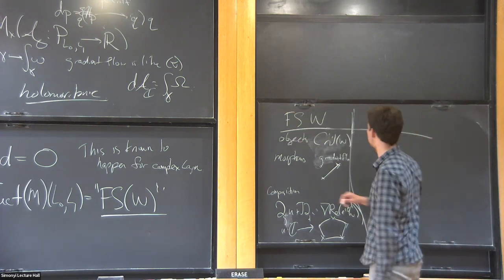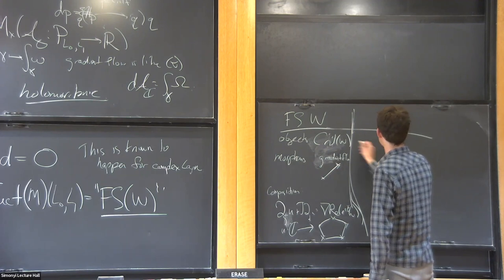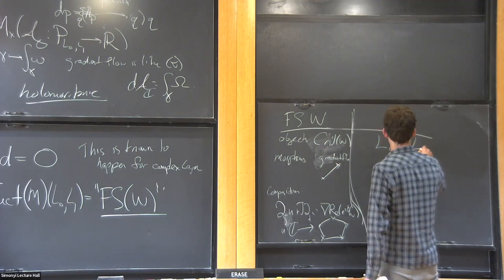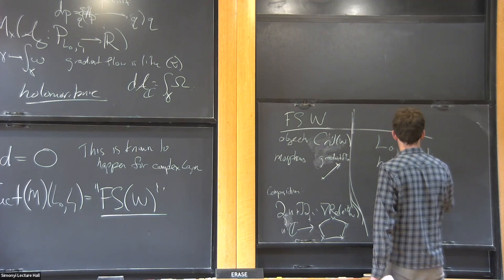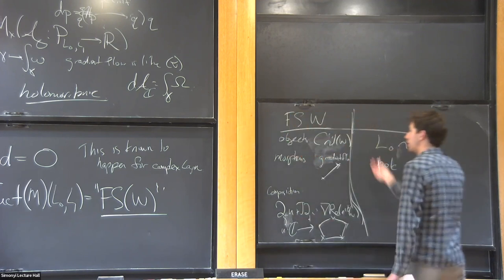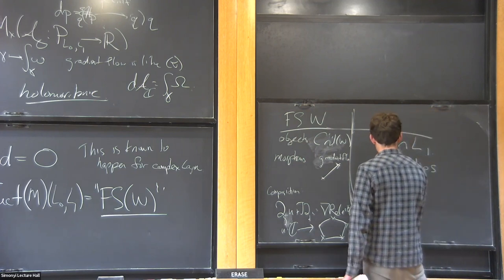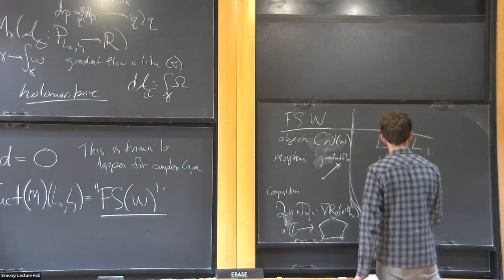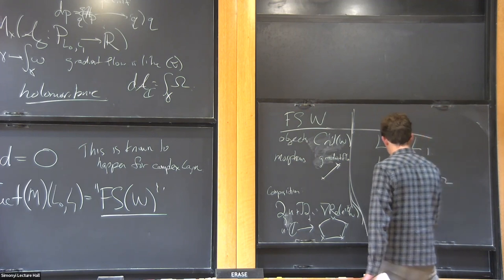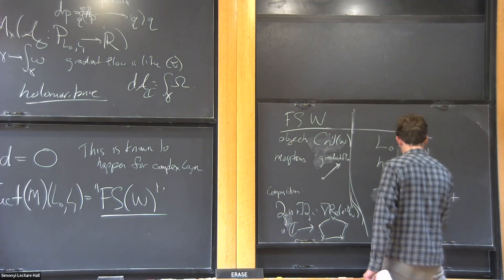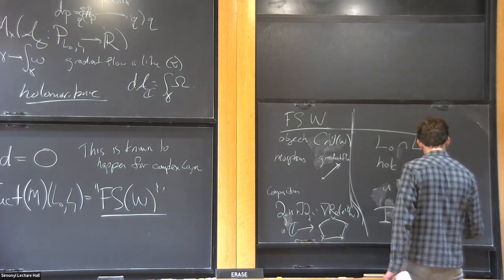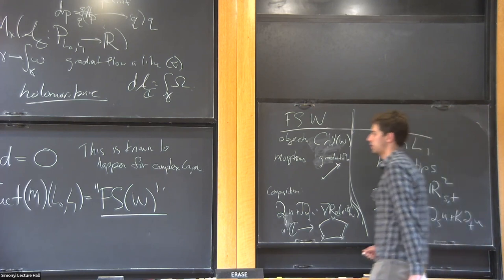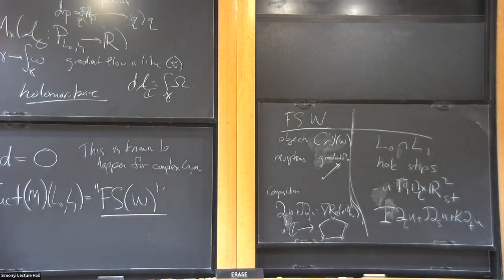If you do this in this case, you get some interesting story. Here you get: the objects are L_0 ∩ L_1, morphisms are holomorphic strips—the ones that we couldn't count before because they would disappear under perturbation. The composition is given by a solution to this kind of equation on a triangle with coordinates τ, s, and t. It's I ∂_τ u + J ∂_s u + K ∂_t.